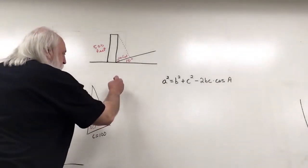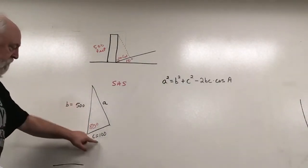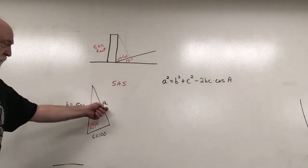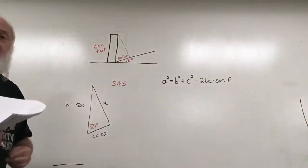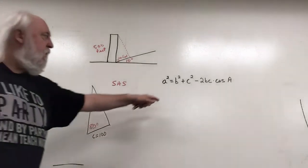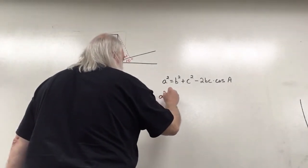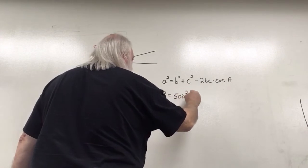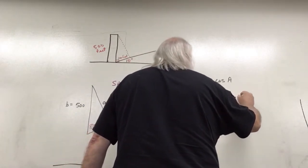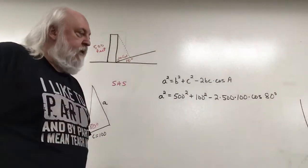From the law of cosines, this is a side-angle-side problem. We know the length of two sides of this triangle and the size of the angle between them, so we can use the law of cosines to find the length of side a, which is the guy wire. Plugging in for sides b and c and angle A, we have: a² = 500² + 100² − 2 × 500 × 100 × cos(80°).